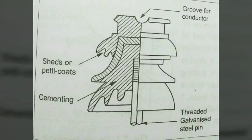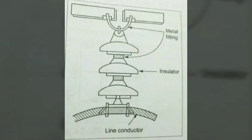Next, suspension type insulators. This type is otherwise called disc or string insulators. As pin type insulators cannot be used for voltages greater than 50 kV, suspension type insulators are used, whose cost is less at high voltages. They consist of a number of porcelain disks connected in series by metal links in the form of a string.